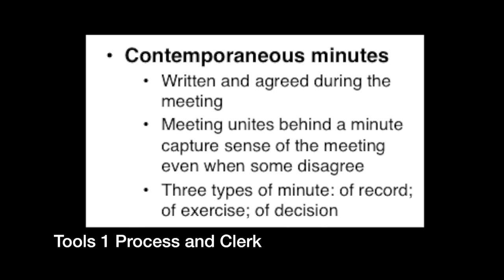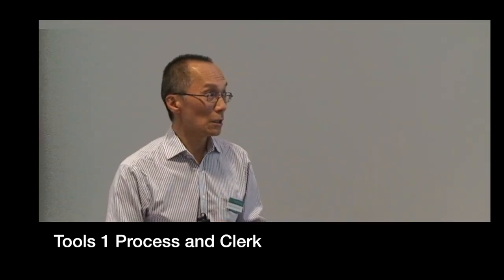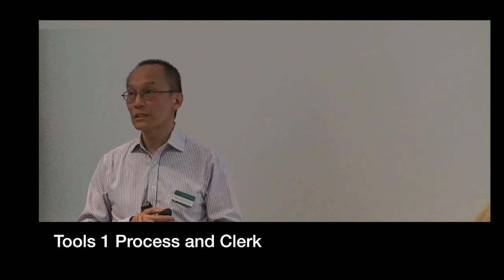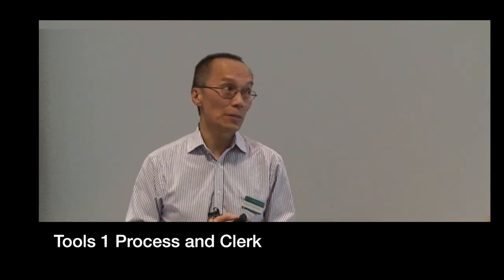Writing the minutes contemporaneously is another critical aspect. There are types of minutes which can help us decide what kind of actions we should be taking. Minutes of record, which record things which have happened; minutes of exercise, which are when there's been a discussion to be summarised but without necessarily making a decision; and then also minutes of decision. I don't know that all meetings use this tripartite distinction, but I've certainly seen it at play in many.